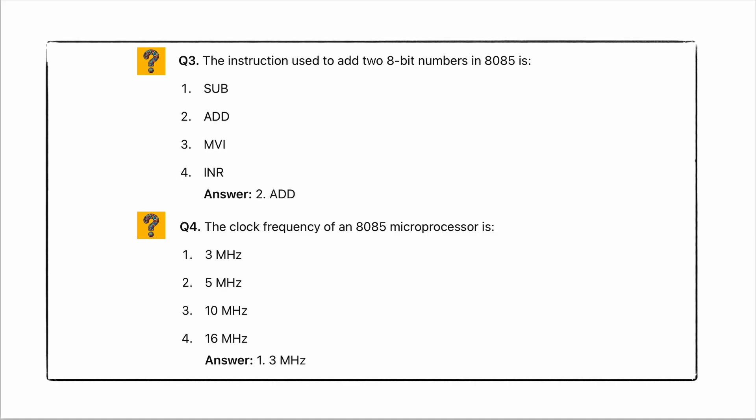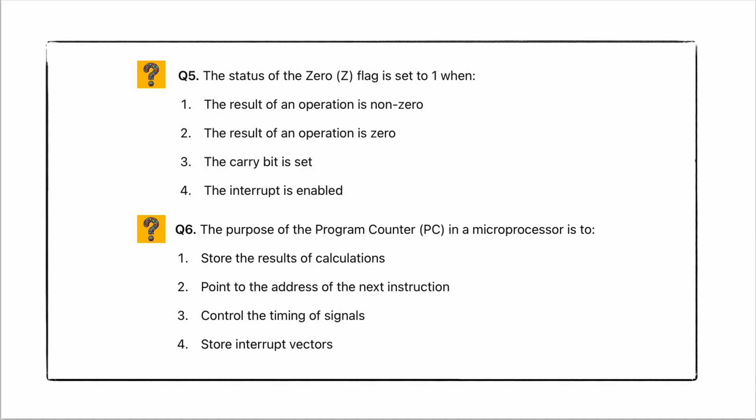The status of the zero flag is set to 1 when? The zero flag in a microprocessor is set to status 1. The purpose of the program counter in a microprocessor is to point to the next instruction.